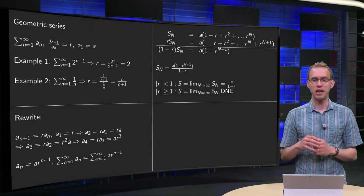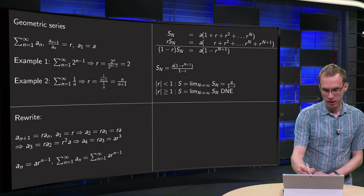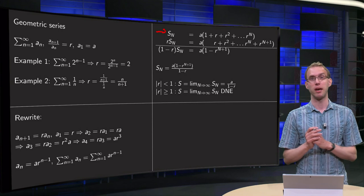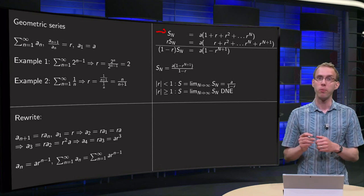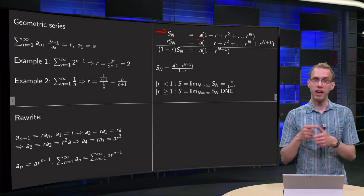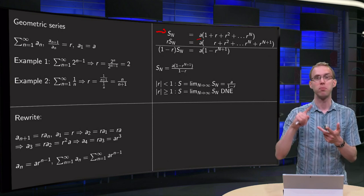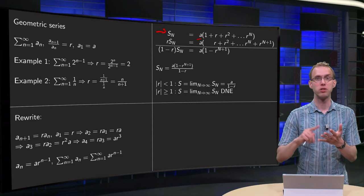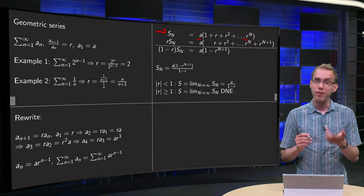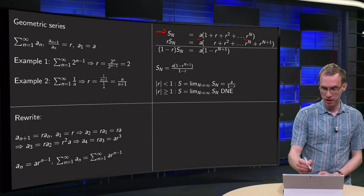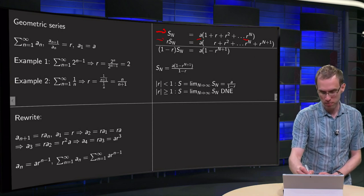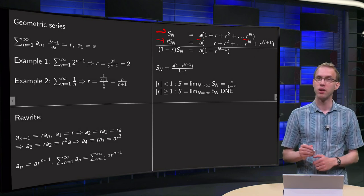Well, now we can do a nice little trick. So S_N is the sum of the first N terms. Well, they all have a in common, so we can factor that out, and then we get a times (1 + r + r^2 + r^3 + ... + r^N). And then we go one further and multiply.